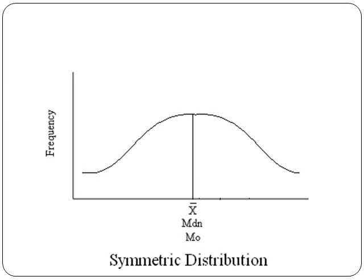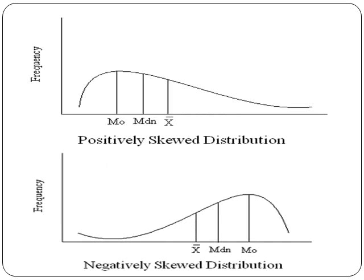Here is another example of a distribution. We will talk about symmetrical and skewed distributions. When a distribution is truly symmetrical, the mean, median, and mode are all at the same location. When it's not symmetrical, we have a skew. With a positively skewed distribution, the most impacted is the mean, then the median, then the mode — the tail is skewed to the right. When we skew to the left, the mean and median pull further in that negative direction.